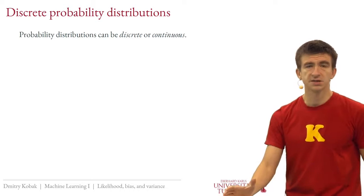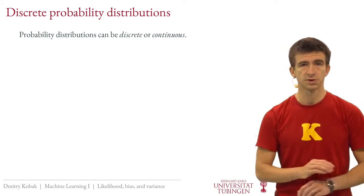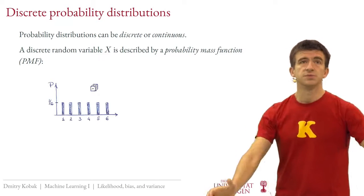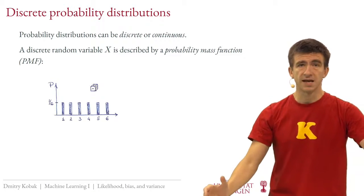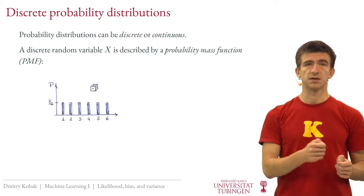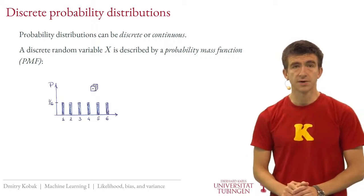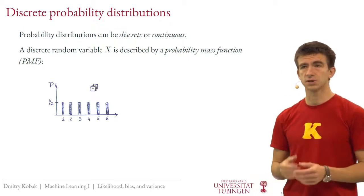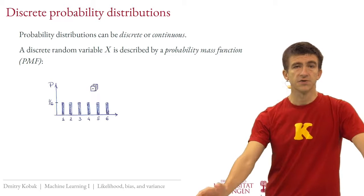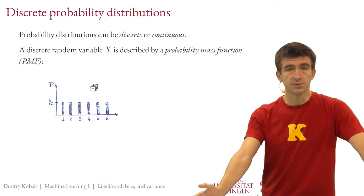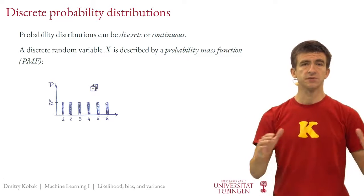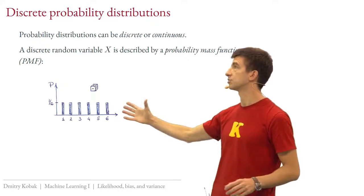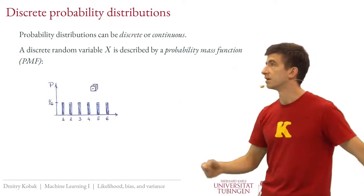Probability distributions can be discrete or continuous. Let's start with discrete probability distributions. A discrete random variable X can be described by a probability mass function, which tells you the probability of obtaining each possible outcome. For example, throwing a fair die gives values one through six, each with probability one-sixth. This is a uniform discrete distribution. This plot is called a probability mass function because it's concentrated on several discrete values.